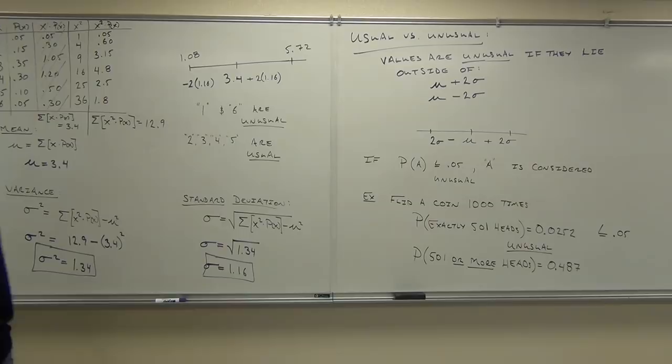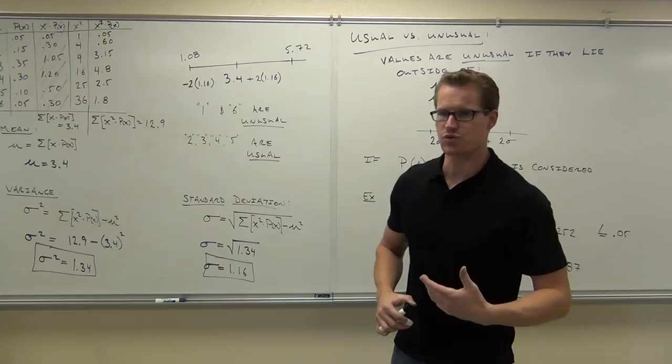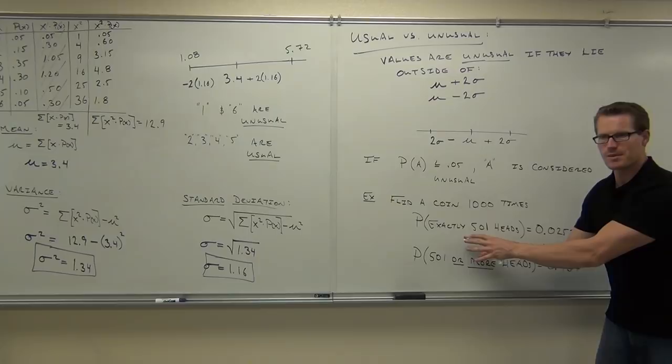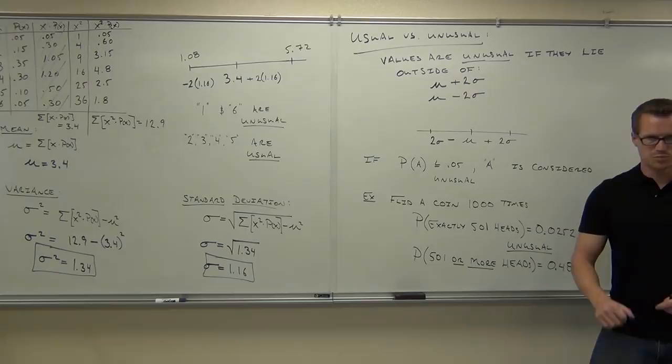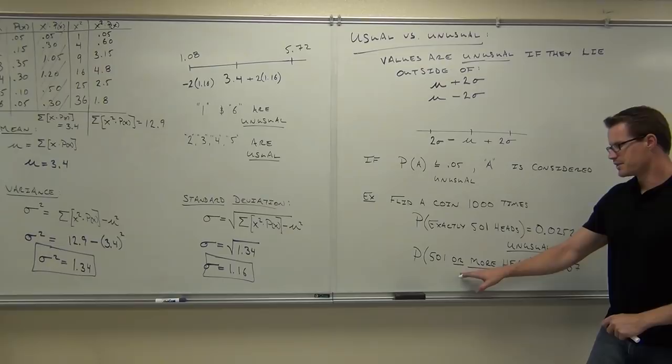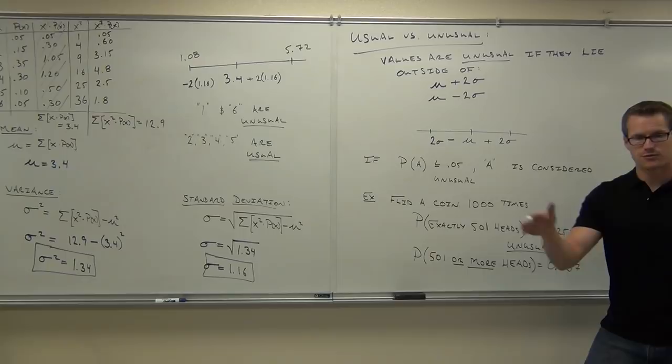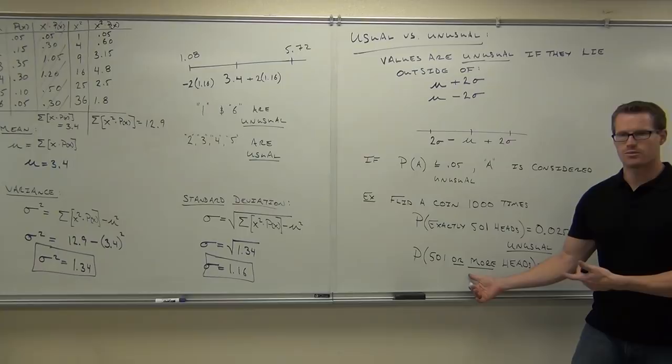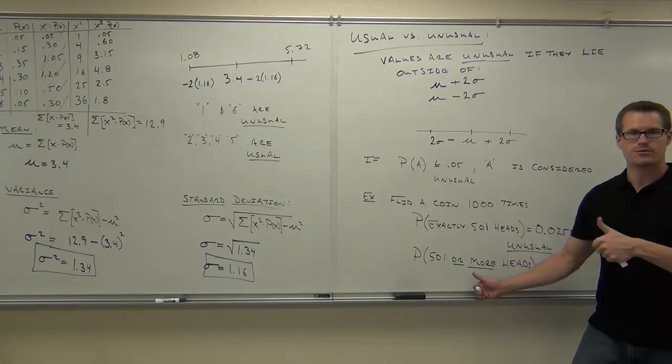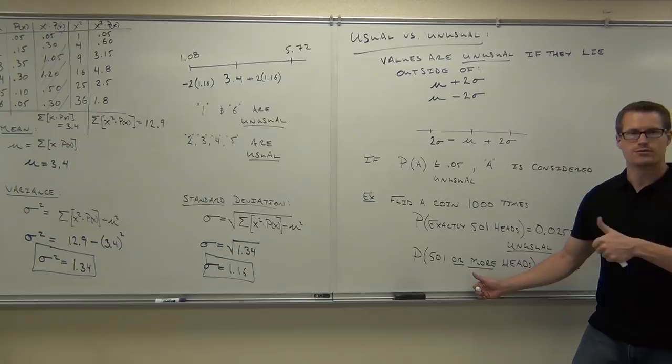The reason 0.487 is so much larger than 0.00252 is that the first probability is landing exactly on 501 heads — just one specific outcome. The second includes 501, 502, 503, all the way to 1000 — many options. This is an 'or' probability: 501 OR 502 OR 503, and so on. When you have an or probability, remember what you do with those probabilities.